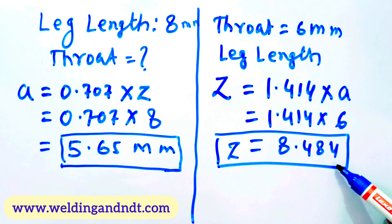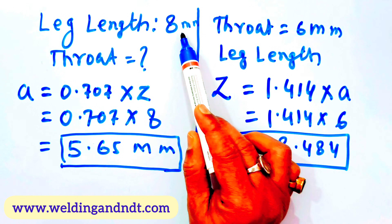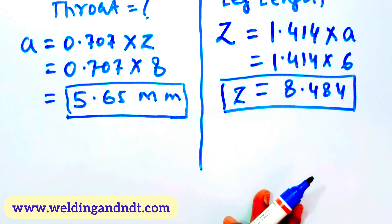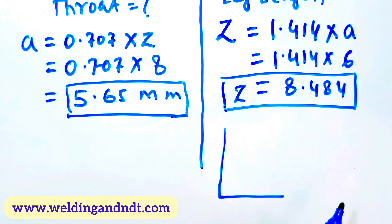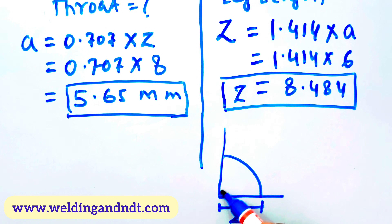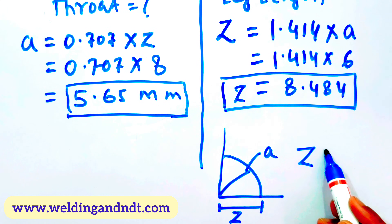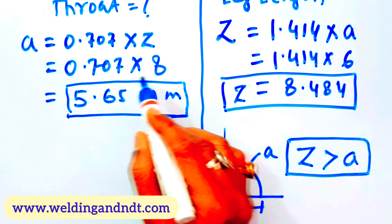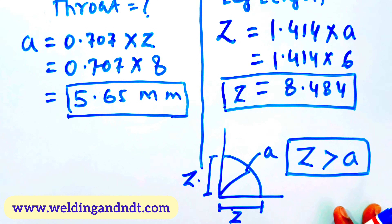Observe: when throat was 6 mm, leg was 8.484 mm; when leg was 8 mm, throat was 5.65 mm. The leg will always be greater than the throat. I will show this in a diagram — if leg is Z and throat is A, then Z will always be greater than A. These two calculations are valid only when both the legs are equal, i.e., in case of an isosceles triangle. Thank you very much.